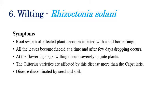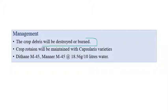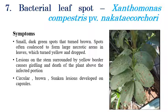Wilt is caused by Rhizoctonia solani, a soil-borne pathogen. Wilting is mainly observed in the root system. Leaves become flaccid with drooping, especially during the flowering stage when infection is most severe. The pathogen is disseminated by seed and soil. For management, crop debris should be removed and burned, crop rotation with other Corchorus capsularis varieties is recommended, and spraying of Dithane M45 at 18.56 grams per 10 liters of water is advised.